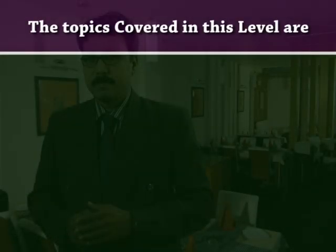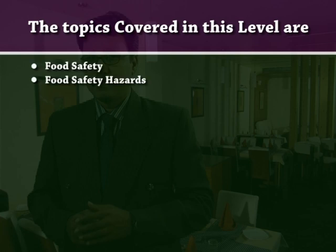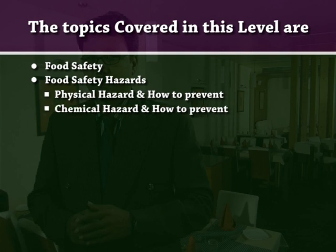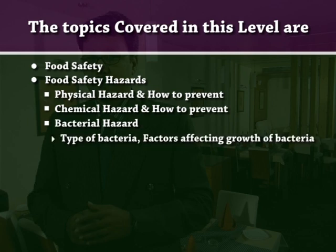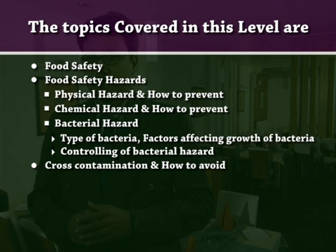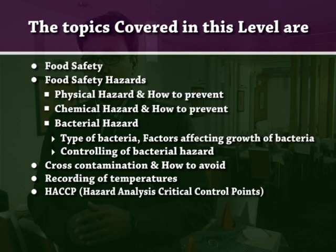The topics covered in this level are: food safety, food safety hazards, physical hazard and how to prevent physical hazard, chemical hazard and how to prevent it, bacterial hazard — including types of bacteria, factors affecting growth of bacteria, and controlling bacterial hazard — cross-contamination and how to avoid it, recording of temperatures, HACCP (hazard analysis critical control points), and flow of food from purchasing to serving.